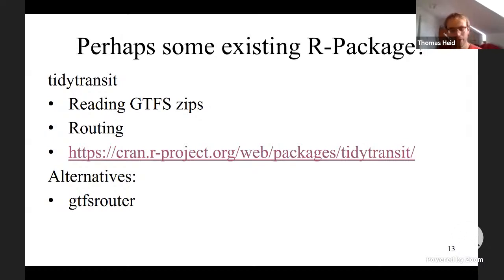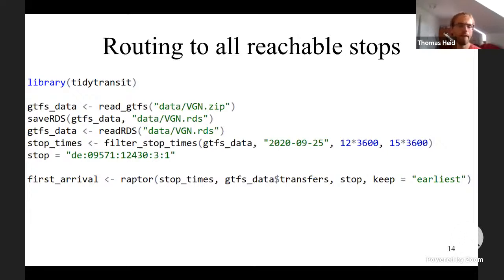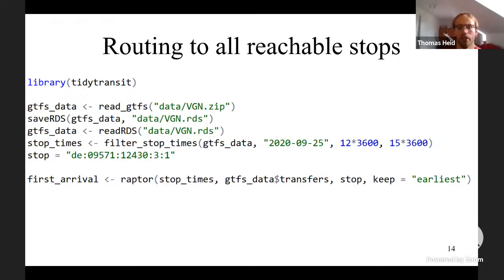The code was really nice and easy. I load the library tidytransit and read the data. I save and reload from RDS for convenience since reading from the zip file of CSVs takes a long time. Afterwards I filter a time window — here 12:00 to 15:00 — and specify a starting stop ID. Using the raptor function I get first arrival times at all reachable stops.